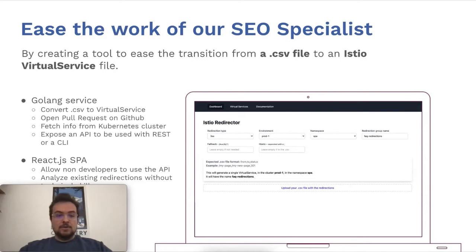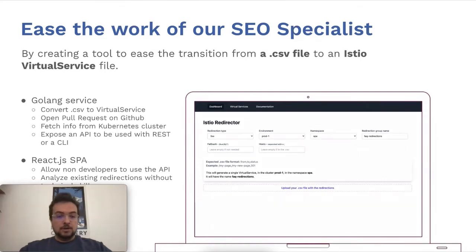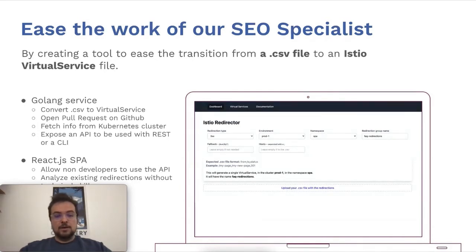The backend is a Golang service that can convert the CSV file to a virtual service, create a pull request on GitHub on your repository, and also fetch information from the Kubernetes cluster where the Istio Redirector is deployed. So you can show on the UI all the virtual services and redirections that are already deployed. It also exposes an API that can be used on the CLI or with a web UI made with React.js.